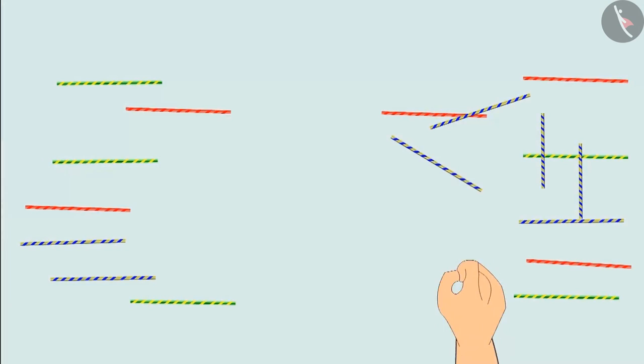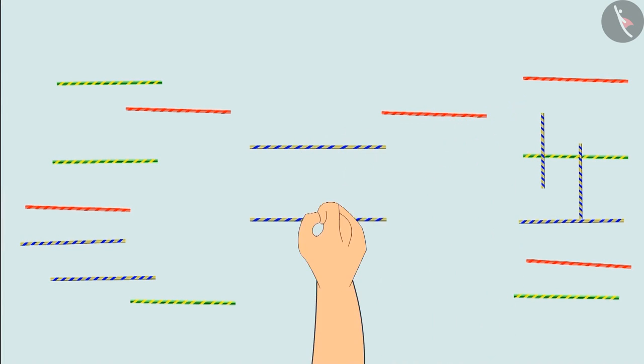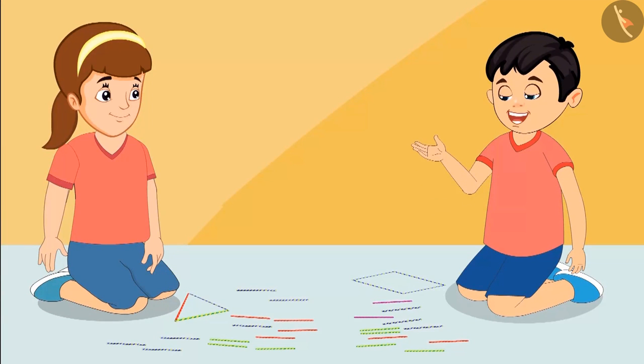Neha, now let me try and you tell me what I have made. Okay, Chotu. I made the shape with four straws. So tell me, what is this shape?